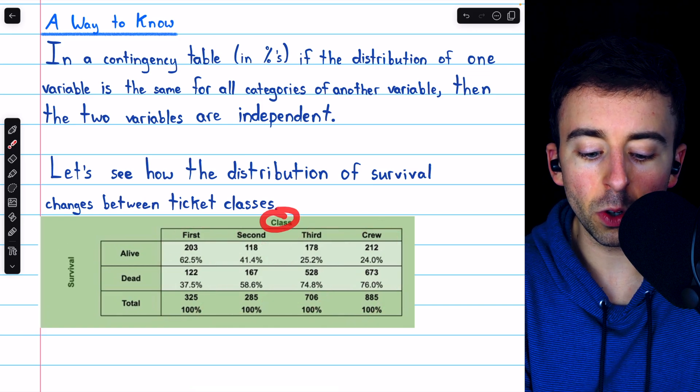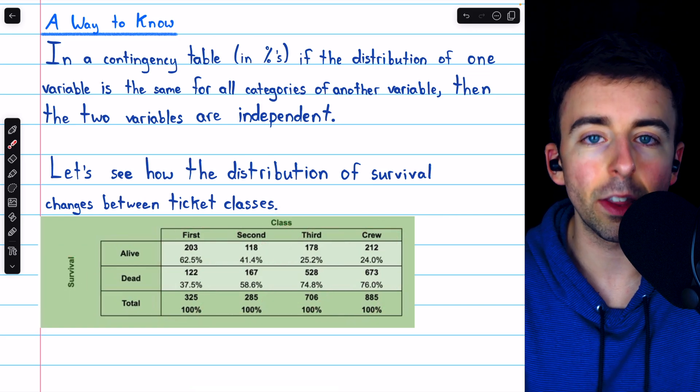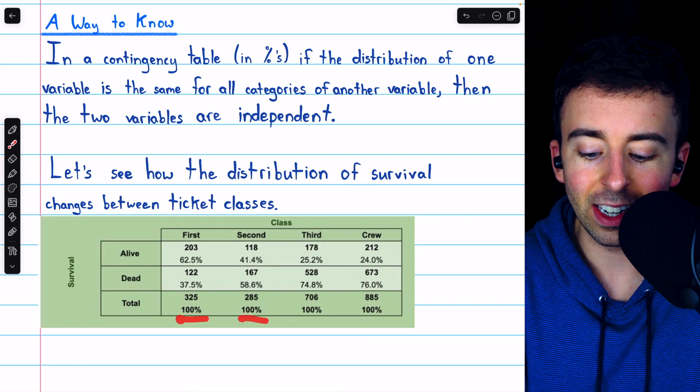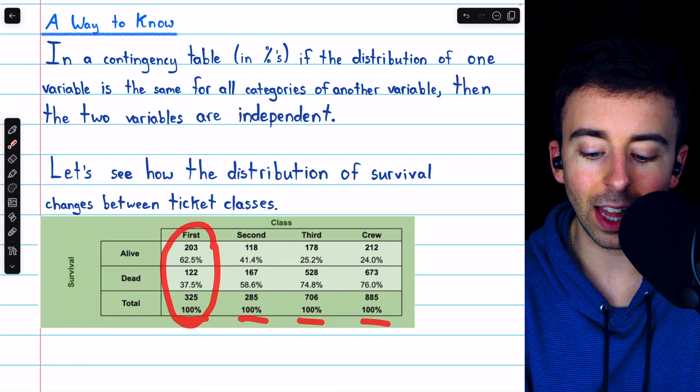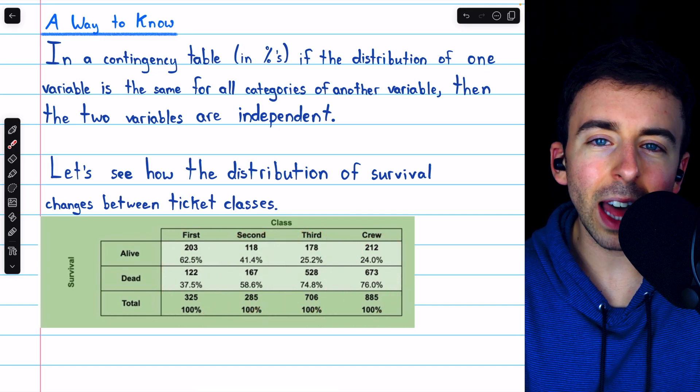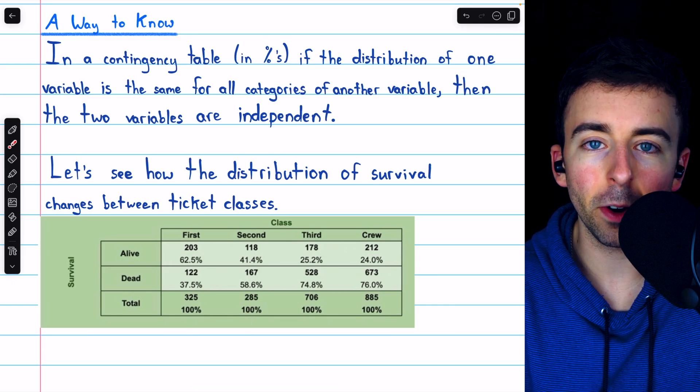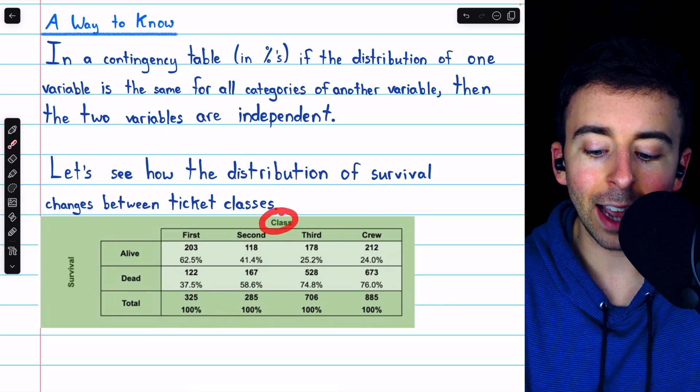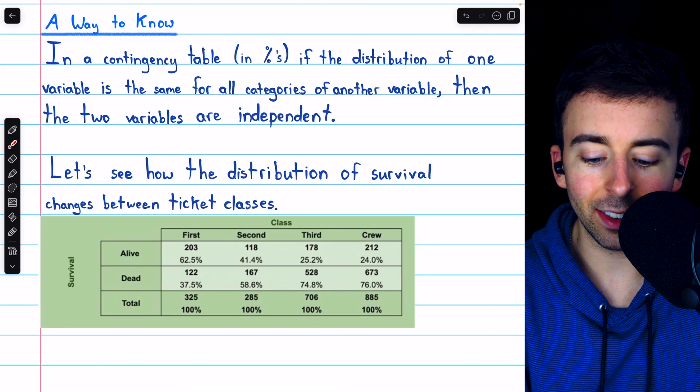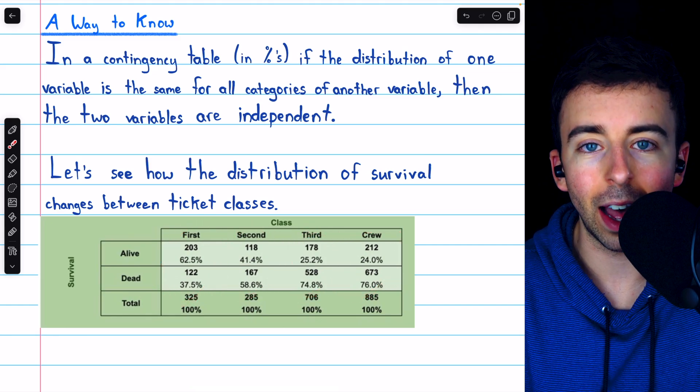If you're just trying to determine if two categorical variables are associated, you can condition on either one. In this case, I've conditioned on the class variable, which is why each class adds up to 100%. But typically, we'll have a sense of which variable we think might explain the other. So I'm conditioning on class because I think it may be the case that somebody's class is going to help predict whether or not they survived.